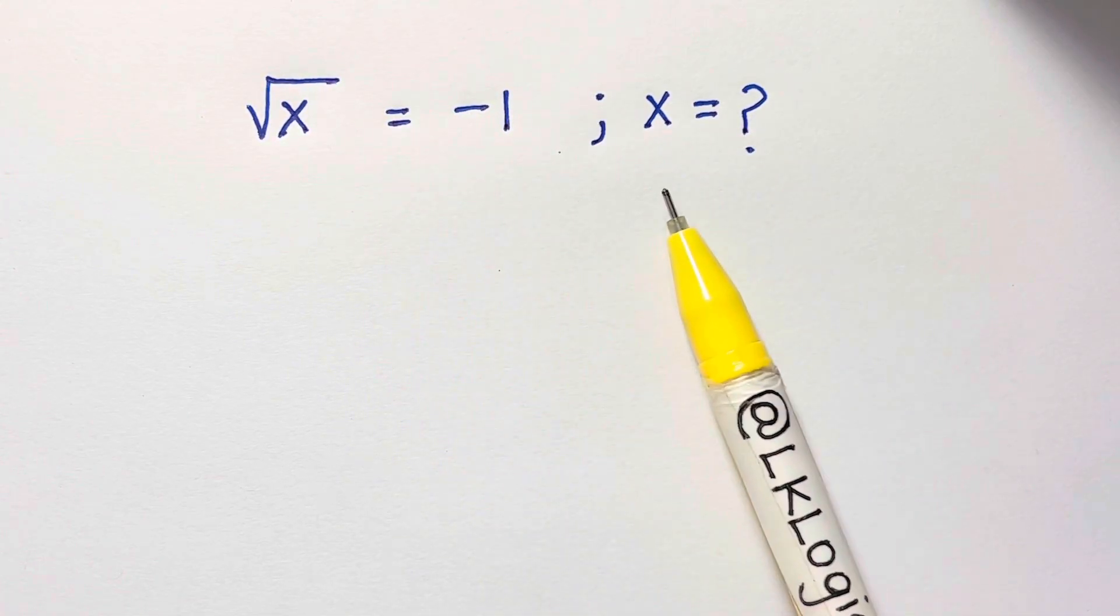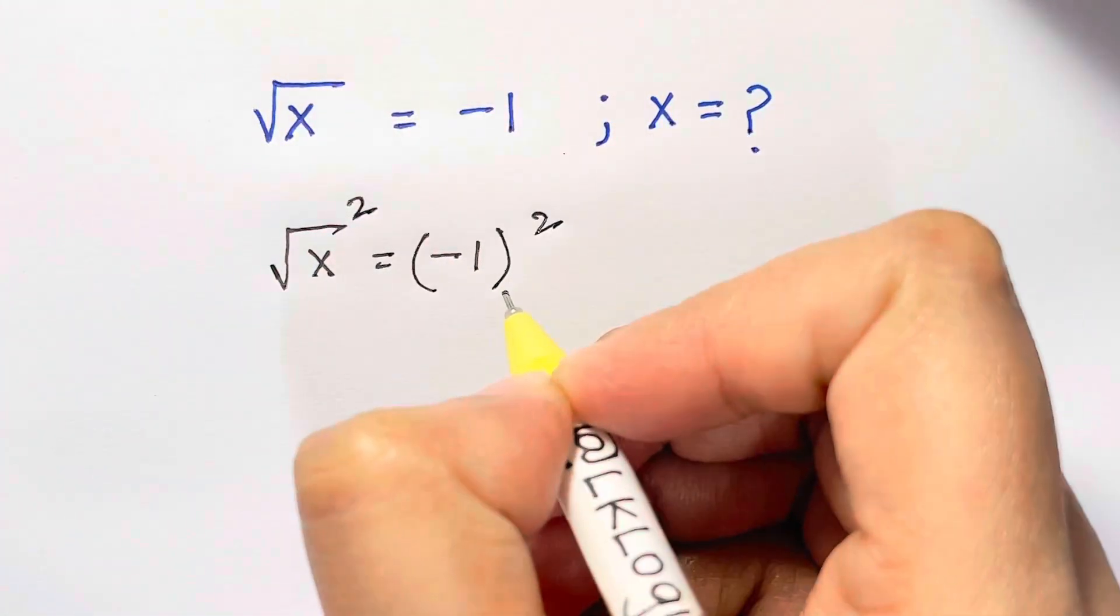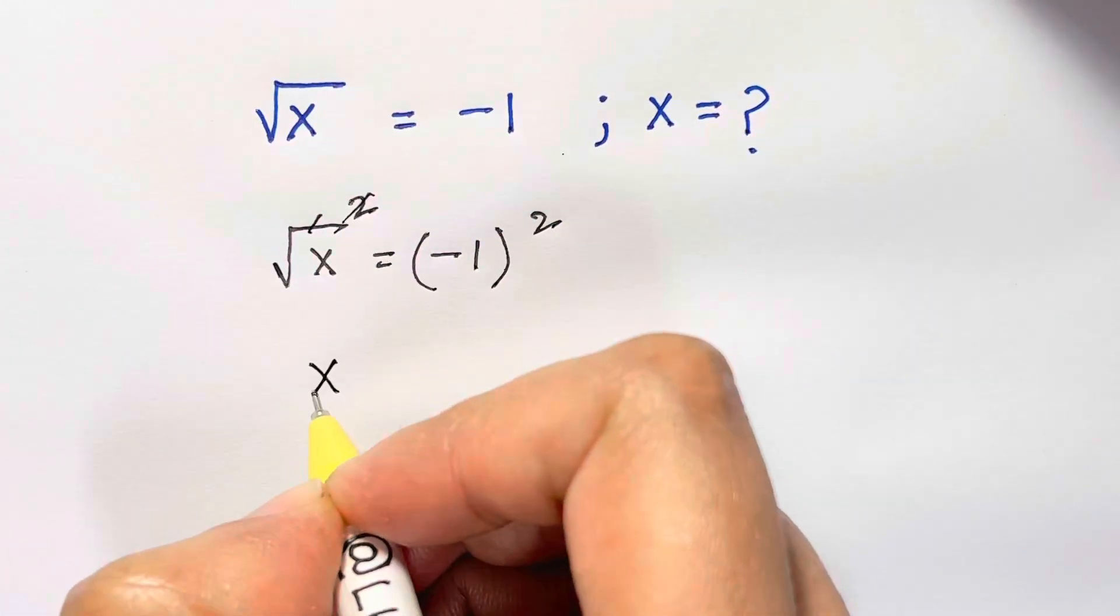To solve this equation, you want to square the left hand side and square the right hand side. Square and the square root sign will cancel out and x equals 1.